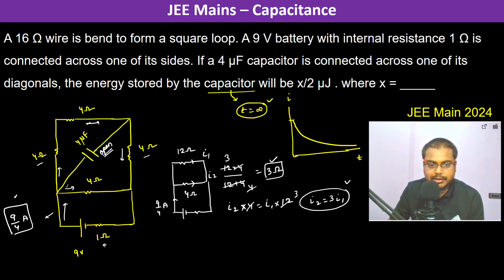And i2 plus i1 is equal to 9 by 4 ampere. So therefore we can write i1 plus i2, which is 3 i1, is equal to 9 by 4 ampere. So therefore i1 is going to be 9 by 16 ampere.